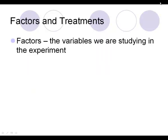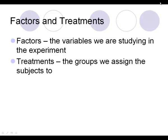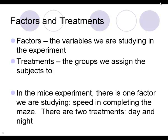Factors and treatments. A factor is the variable we're studying in the experiment — you can have more than one or just one. Treatments are the groups that we assign the subjects to. In the mouse experiment, there is one factor — speed for completing the maze — and two treatment levels: the day group and the night group.